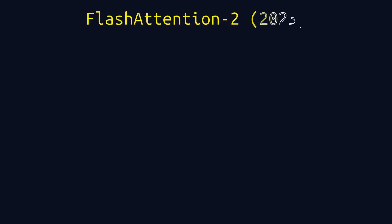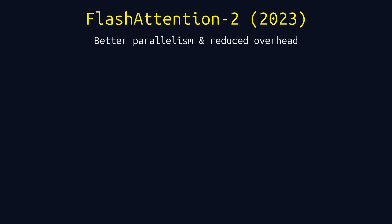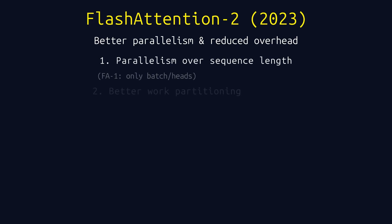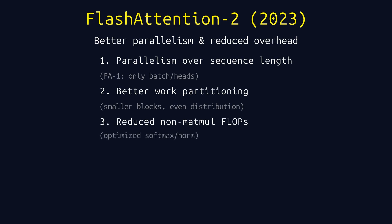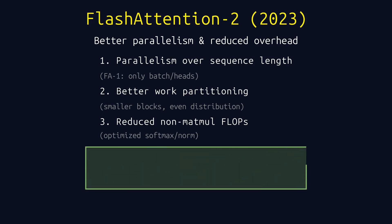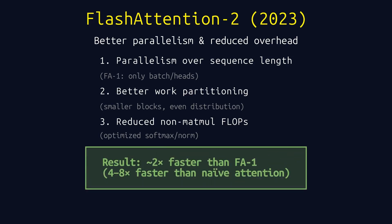Flash Attention 2, released in 2023, improved on the original with better parallelism. Flash Attention 1 parallelized over the batch and the attention heads. Flash Attention 2 also parallelizes over the sequence length, distributing different Q blocks to different thread blocks on the GPU. It also reduced non-matrix-multiply overhead, optimizing the softmax and normalization operations, and used better work partitioning for even load balancing. The result: roughly twice as fast as Flash Attention 1, especially on longer sequences.